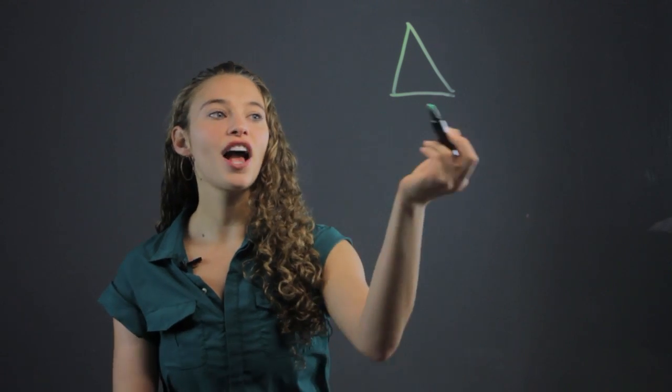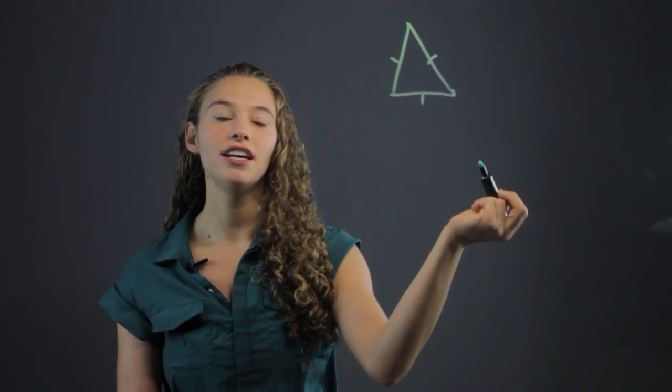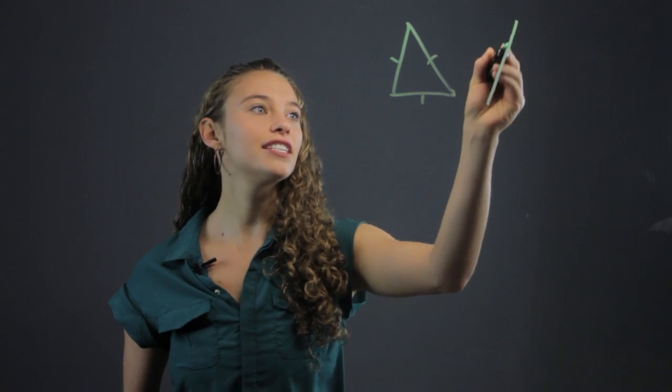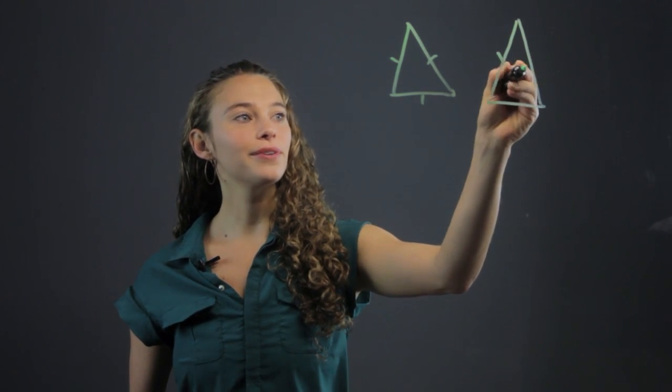One is we can call a triangle equilateral if it has all equal sides. There's also an isosceles triangle, which has two equal sides and a third side that's not equal.